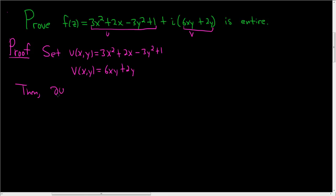So let's compute ∂u/∂x, that's going to be 6x + 2. And then ∂v/∂y, holding x constant, we end up with 6x + 2. So we have that ∂u/∂x is equal to ∂v/∂y.